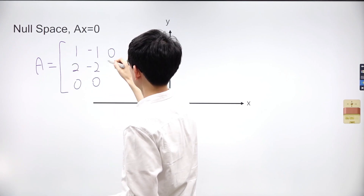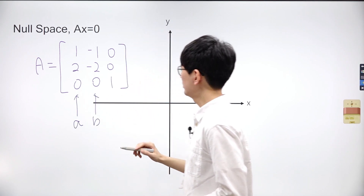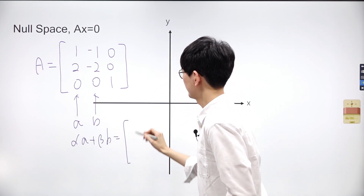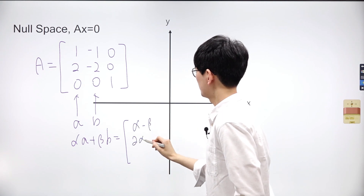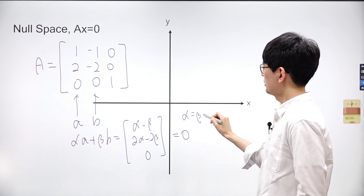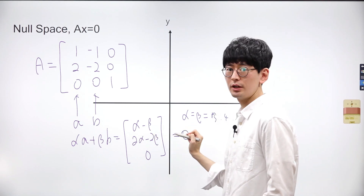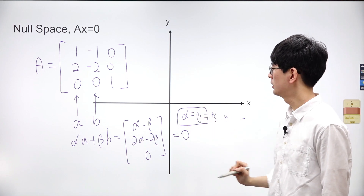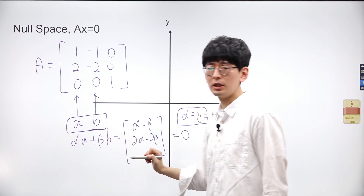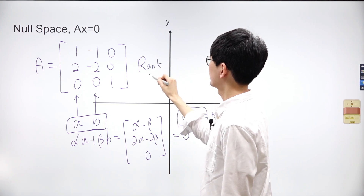Let's consider a new matrix A consisting of 3 vectors. Let's denote the first two vectors as A and B. When we combine alpha times vector A with beta times vector B, we obtain alpha minus beta, 2 alpha minus 2 beta, and 0. Can we get 0 for each value? Yes, when both alpha and beta take on the same value — whether it's 3, 4, or any other value — the resulting combination equals 0. When alpha equals beta, the result will be 0. Consequently, vectors A and B are linearly dependent and the rank of the matrix decreases by 1, making it 2.